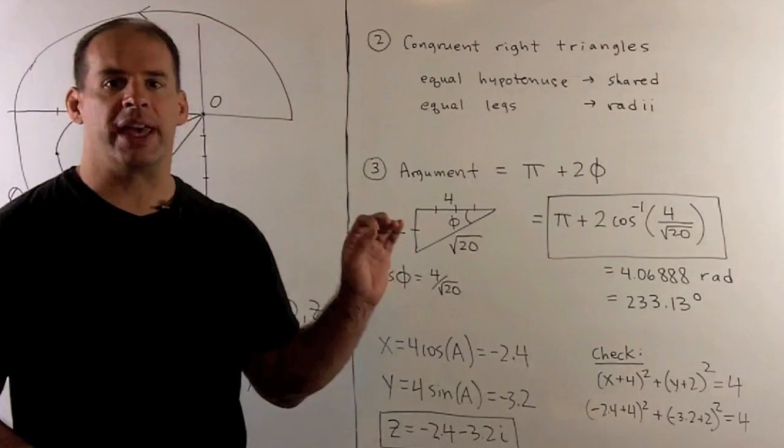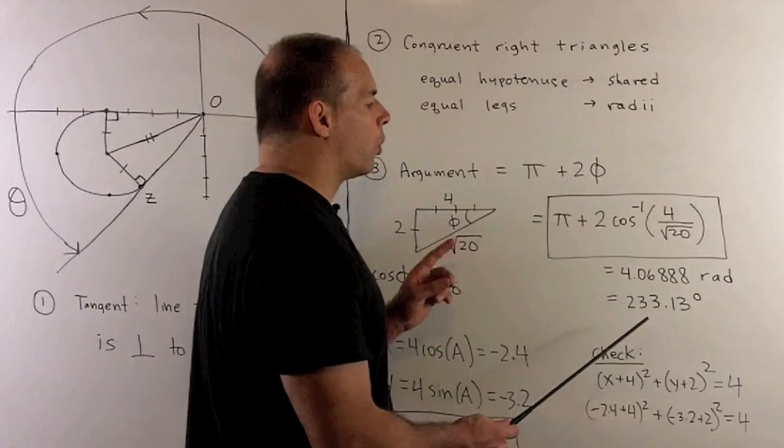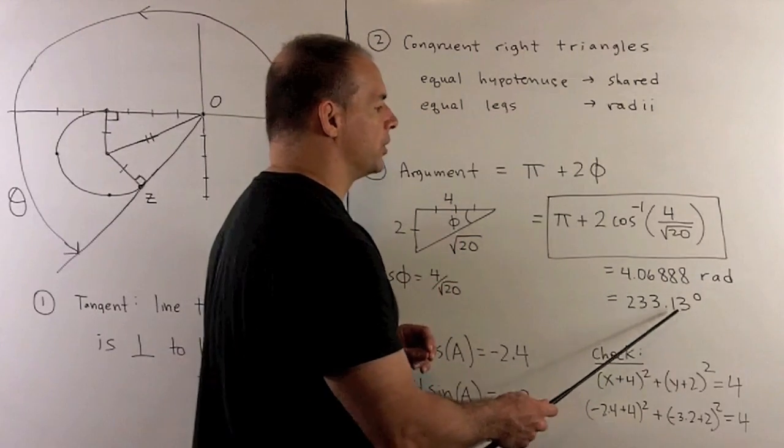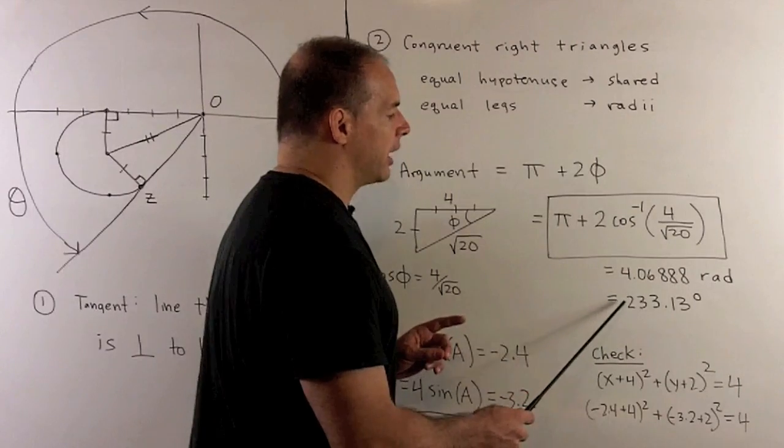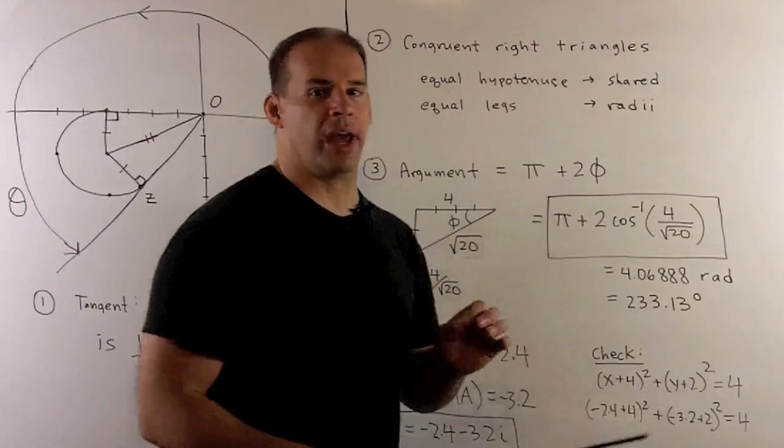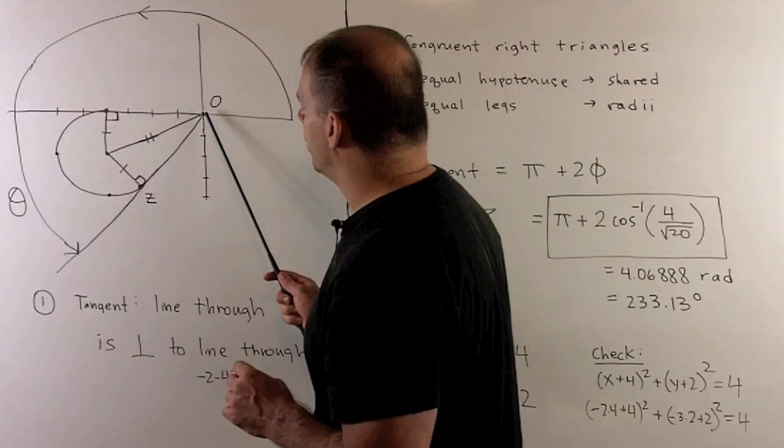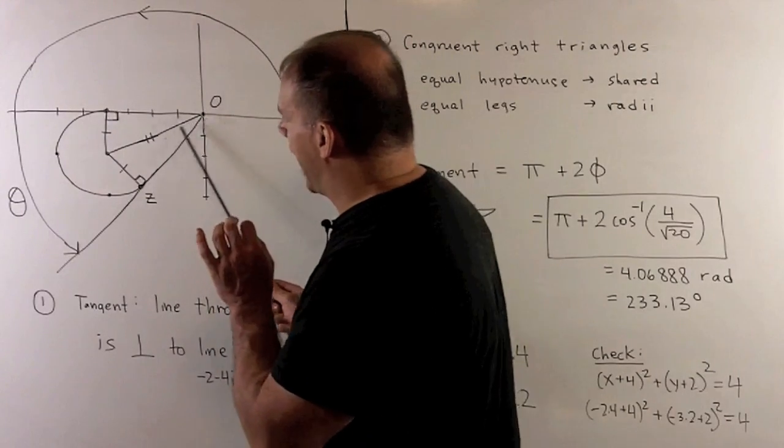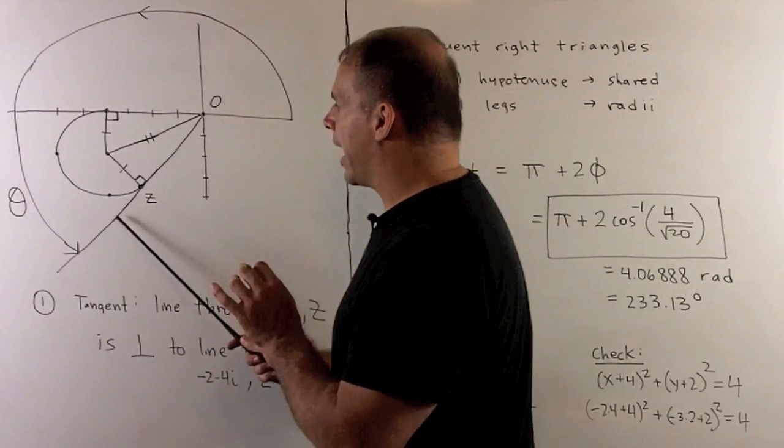If we push this into a calculator, we have 4.06888 radians, or 233.13 degrees. So, if we check this, 233 degrees is bigger than 225 degrees. 225 degrees is going to be the angle that cuts this right angle here in half. So, that looks like we have the right angle.